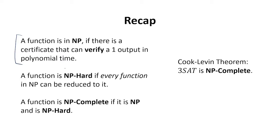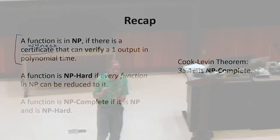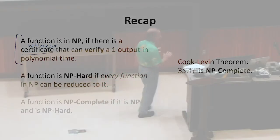And the other way to define that class is there is some certificate, or we also call that a witness, that you can verify one output to that function in polynomial time. If the output is one, there's some way to prove it that you can verify in polynomial time. Like, give me the actual path.